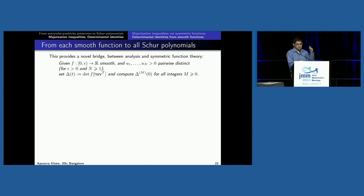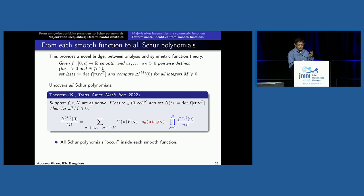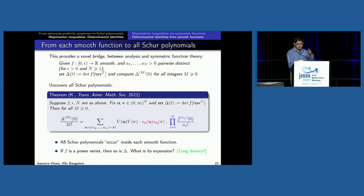Let me recap the setup: given some smooth function, given pairwise distinct u_i's and v_i's, set δ(T) to be the determinant of F applied to a rank-one matrix, and compute the Taylor coefficients. This turns out to uncover every Schur polynomial. There's a specific explicit expression: a Vandermonde part, a Taylor coefficient part, and a Schur polynomial part. This happens for every smooth function, and depending on the tuple N indexing the Schur polynomial, every such tuple occurs inside the sum where the derivative order is the sum of the components of N.